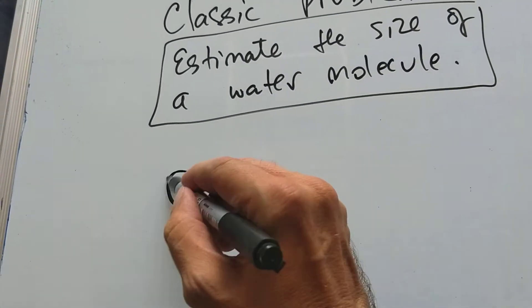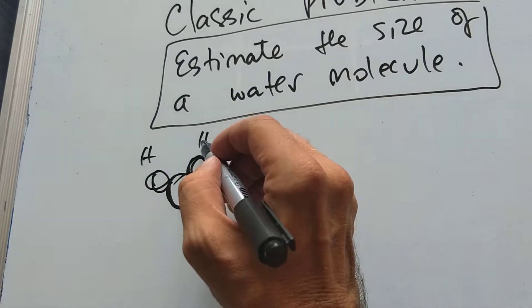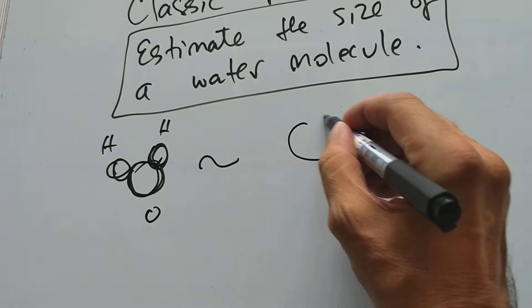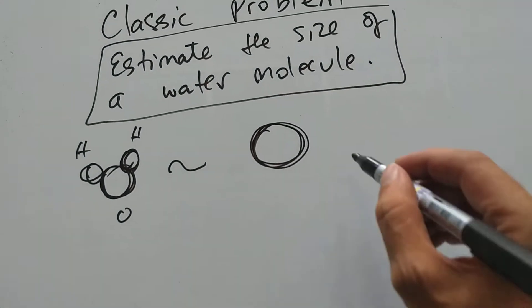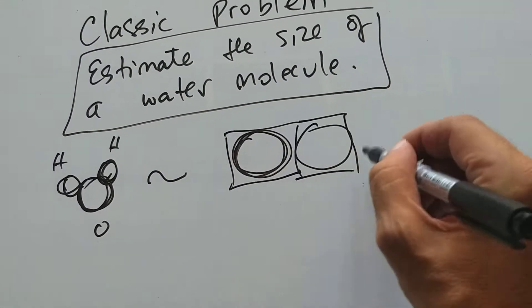A water molecule kind of looks like this, two hydrogens and an oxygen. But for our purpose we have to approximate this as just a sphere. And the spheres are packed together in boxes.